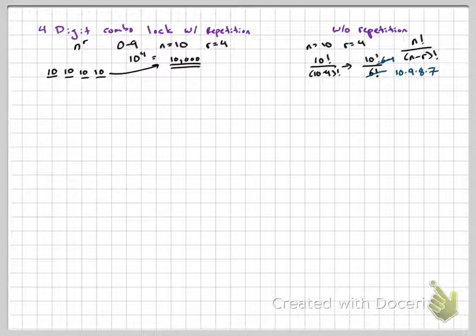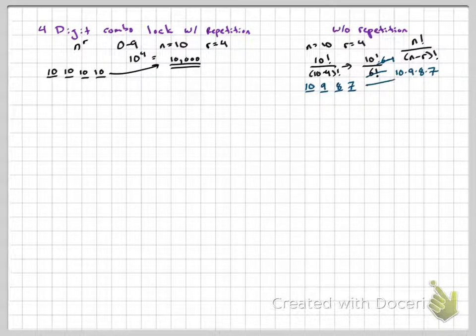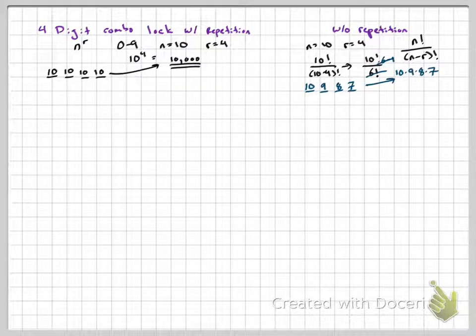And if you remember, guys, if I was doing the FCP, for my first one, I have 10 numbers to choose from, but repetition is not allowed. So I have one less choice each time. It's the same exact thing. So 10 times 9 times 8 times 7 is 5,040 different options.